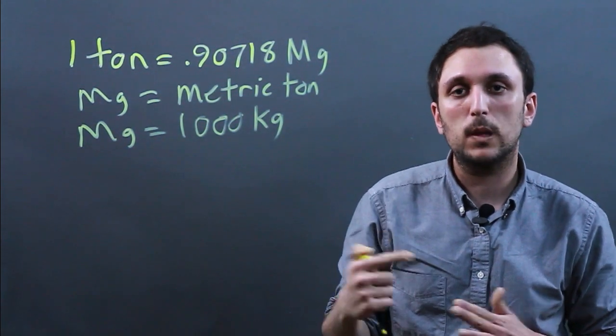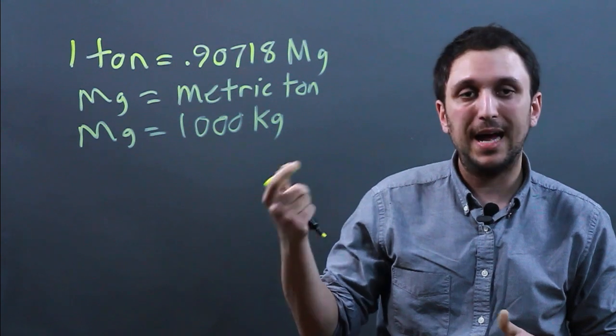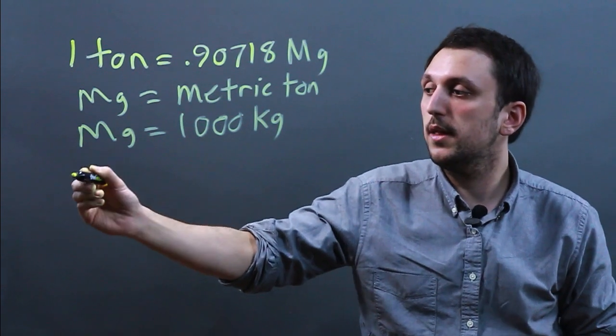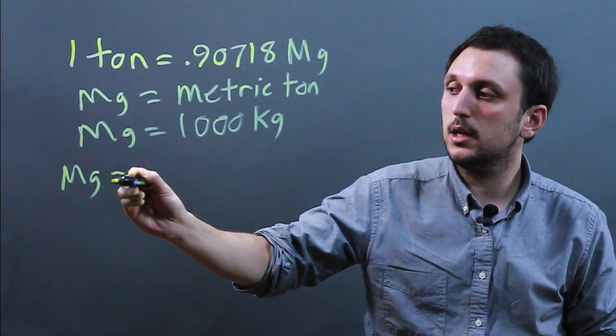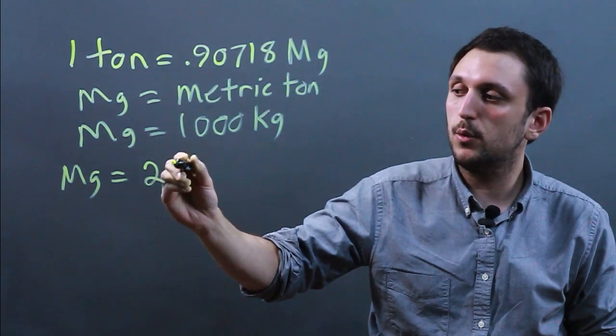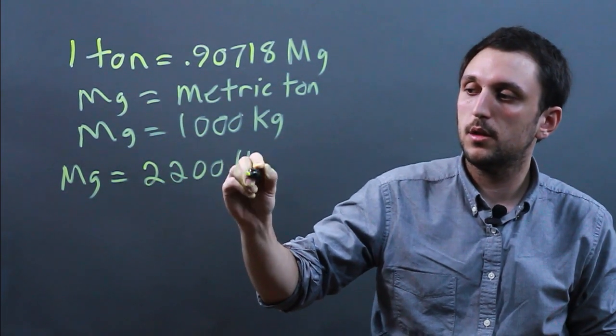Now a kilogram has the closest relationship with the American pound so we can say that one metric ton or a megagram equals roughly 2,200 pounds.